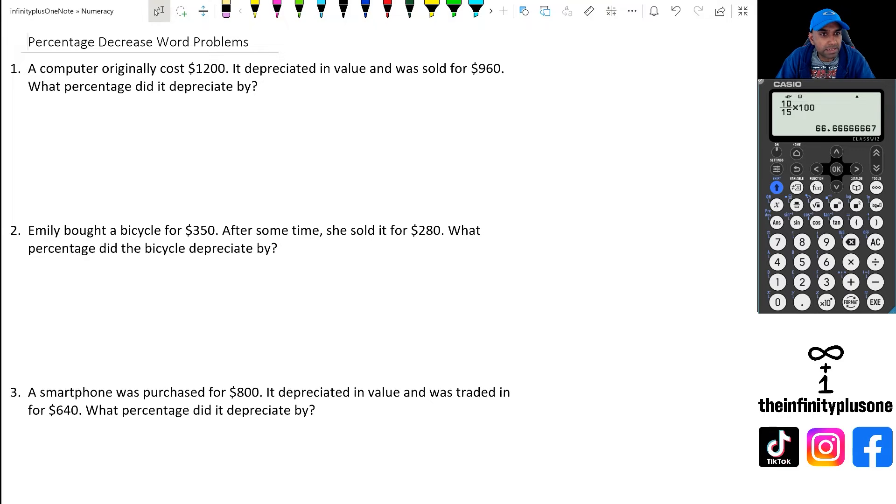So what we're going to do is we've got a computer that costs $1,200. It's depreciated in value and was sold for $960. So the first thing we're going to try and do is work out how much money this computer has actually decreased by. To do that, we're going to go 1,200 take away 960. And when we do that, we find out that it's actually reduced by $240. So it's reduced by $240 and we got $240 out of the $1,200.